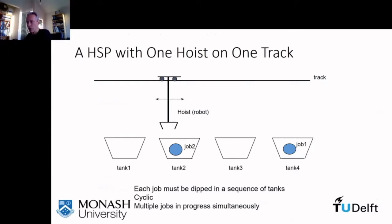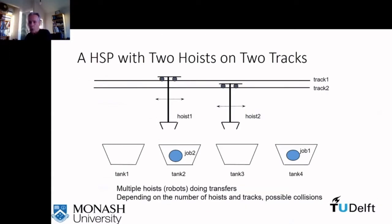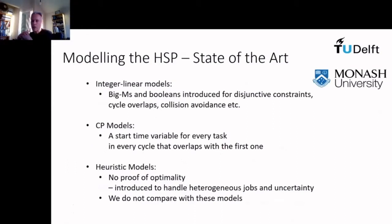Hoist scheduling problems have various configurations of hoists and tracks, sometimes multiple hoists on one track and sometimes multiple tracks so hoists can move freely past each other. In the current state of the art, integer linear models suffer from an explosion of complexity due to the need for big-M formulations to handle discrete choices such as non-overlap, assignment of tasks to hoists, and assignment of cycle differences. CP models are more compact but suffer from growth in the number of tasks modeled with the number of cycles in process per period, impacting scalability. Heuristic models can scale but the quality of solutions for large problems is unknown.